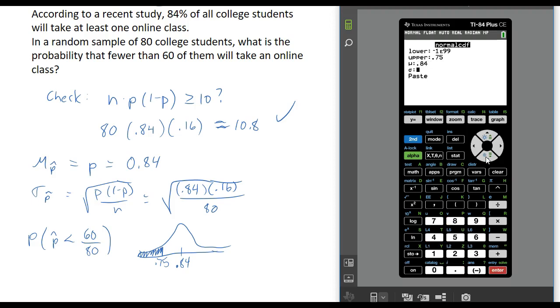My mean is 0.84, and my standard deviation is the square root of 84% times 16% divided by the sample size, which was 80. If you have the older calculator which doesn't give you this menu, you just want to type in these four values in this order when it takes you back to the home screen. It looks like I get 0.014. So in this random sample of 80 college students, there's about a 1.5% chance that fewer than 60 of them are going to take an online class at some point. So the chances are not good that it will be this small of a proportion.